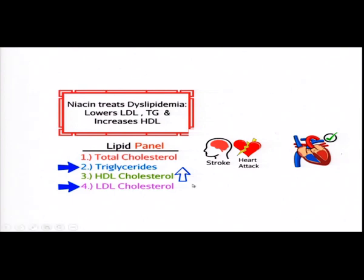The ideal lipid profile is: increased HDL, decreased LDL, and decreased triglycerides. An increase in LDL and triglycerides alongside a decrease in HDL is not a good sign. Since niacin has a potential impact on cholesterol metabolism, it is utilized in therapy for dyslipidemia. A lipid panel test for those susceptible to obesity or diabetes looks at total cholesterol, triglycerides, HDL cholesterol, and LDL cholesterol. HDL is the relatively 'good' cholesterol that regulates metabolism and supports healthy inflammatory processes.